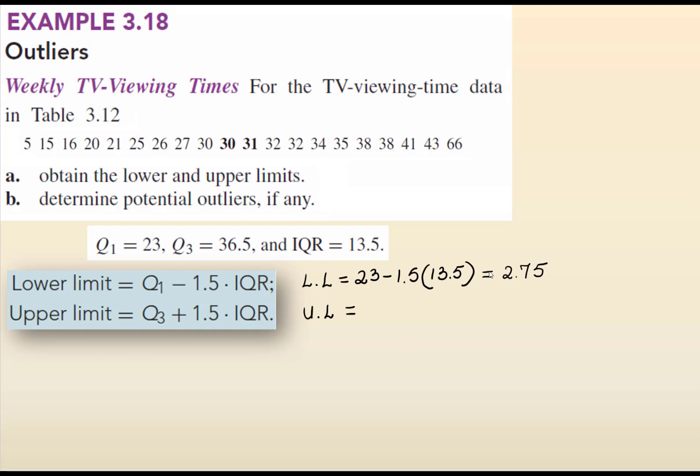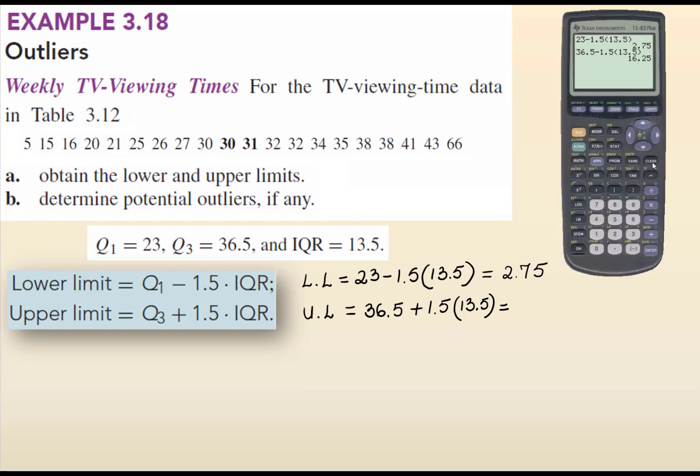So, the lower limit is 2.75, the upper limit will be 36.5, which is the third quartile, plus 1.5 IQR, which is 13.5, which can be done, of course, with a calculator.